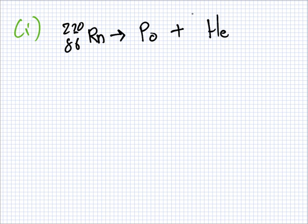220, 86 Rn. Radon. Plus? No, becomes alpha decay. Helium. Plus helium. So we have to balance this. Easy peasy for babies, let's do this thing. Yes. Done.